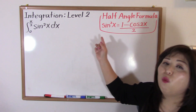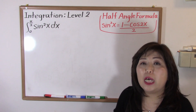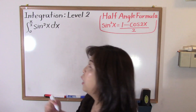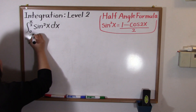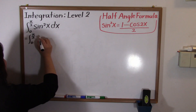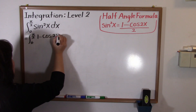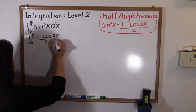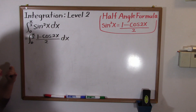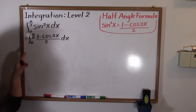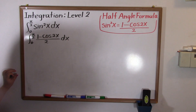We substitute because the calculation is going to be easier. So this becomes the integral from zero to pi over two of one minus cosine two x, over two, dx.